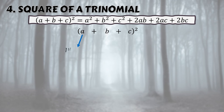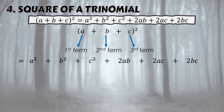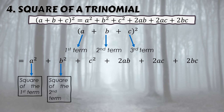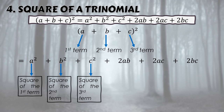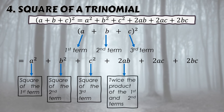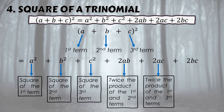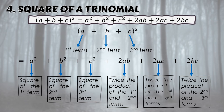In the square of a trinomial formula: a is the first term, b is the second, c is the third. a squared = square of first term (a times a); b squared = square of second term (b times b); c squared = square of third term (c times c); 2ab = twice the product of first and second; 2ac = twice the product of first and third; 2bc = twice the product of second and third.